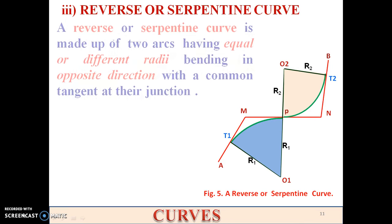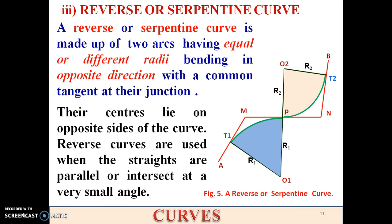A reverse curve — otherwise termed a serpentine curve — is made up of two arcs that can have equal or different radii, bending in opposite directions with a common tangent at the junction. In the figure, Mn is the common tangent, and the centers O1 and O2 lie on opposite sides of Mn. Reverse curves are used when straights are parallel or intersect at a very small angle.